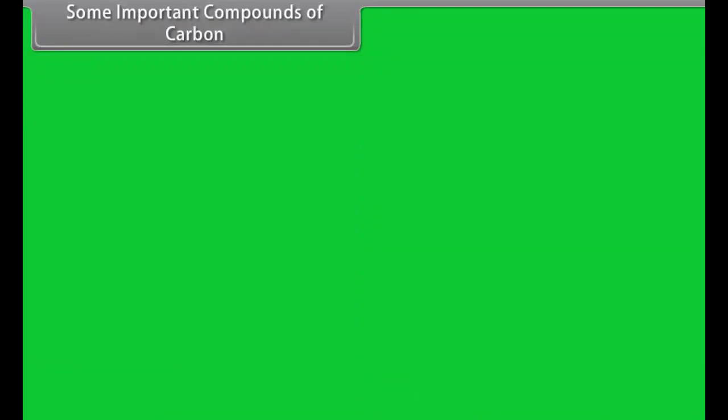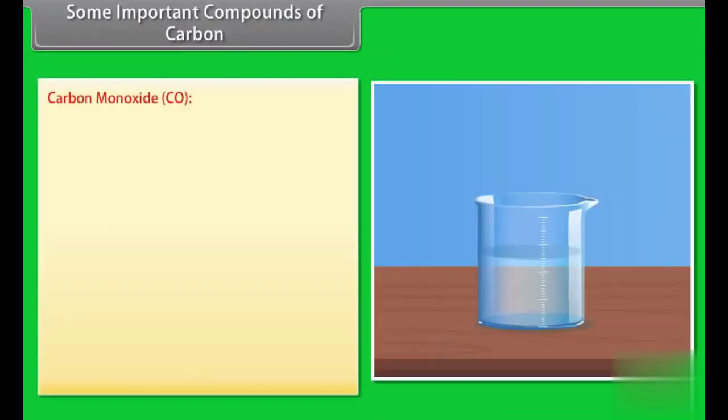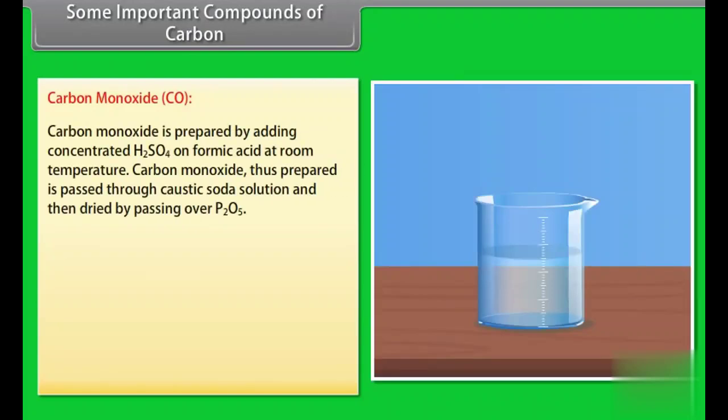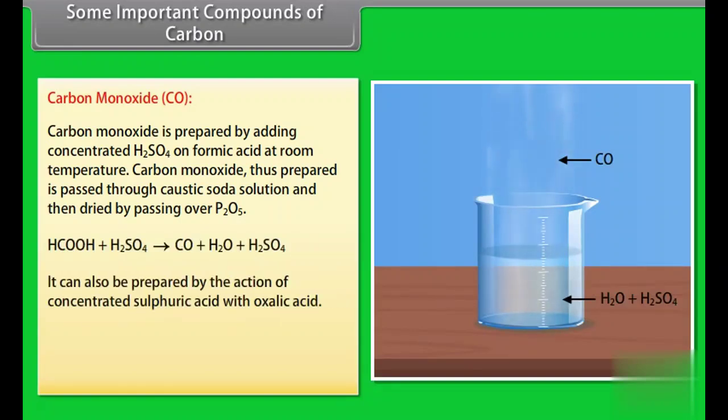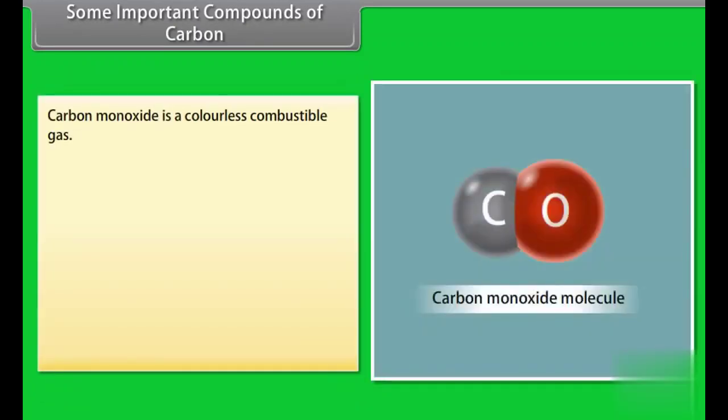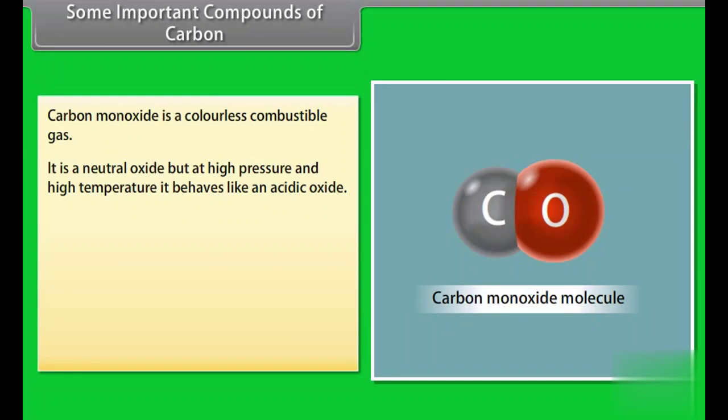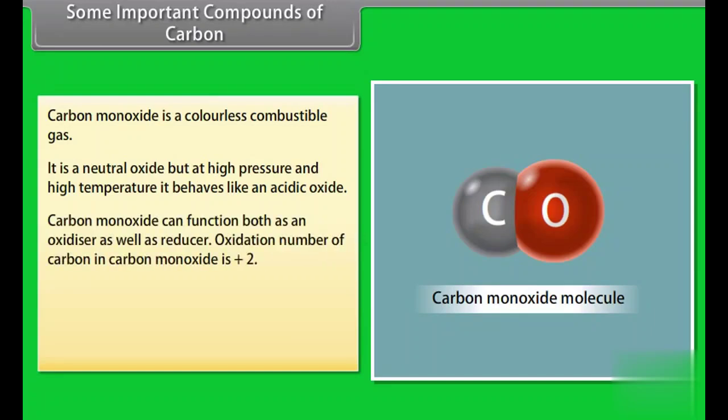Some important compounds of carbon. Carbon monoxide. Carbon monoxide is prepared by adding concentrated H2SO4 on formic acid at room temperature. Carbon monoxide thus prepared is passed through caustic soda solution and then dried by passing over P2O5. It can also be prepared by the action of concentrated sulfuric acid with oxalic acid. Carbon monoxide is a colorless combustible gas. It is a neutral oxide but at high pressure and high temperature, it behaves like an acidic oxide. Carbon monoxide can function both as an oxidizer as well as reducer. Oxidation number of carbon in carbon monoxide is +2.